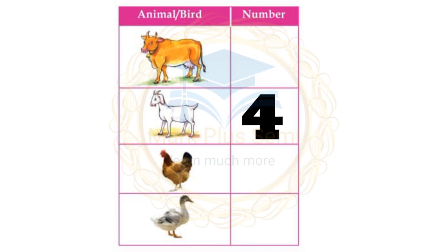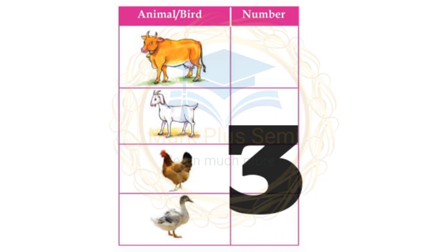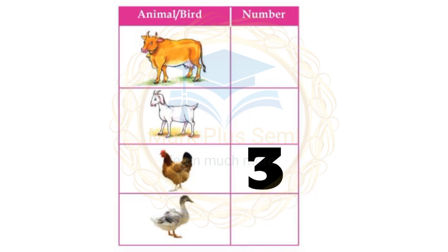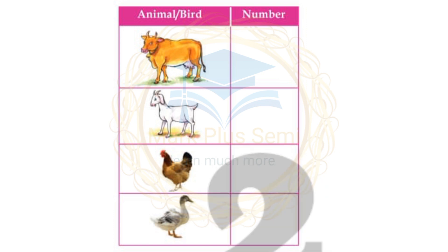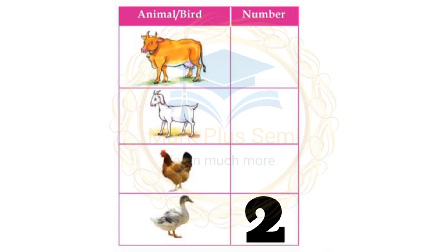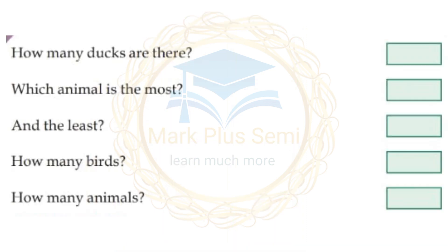Counting again: 1, 2, 3, 4 goats. How many hens are there? 1, 2, 3 hens. How many ducks are there? 1, 2 ducks.